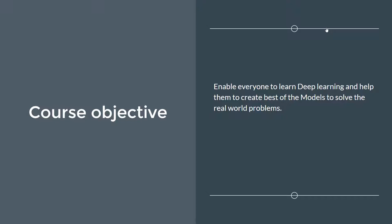Now we know the course prerequisites and what this course is about. What's the objective we are trying to achieve? The course objective is pretty simple: we want to enable everyone to learn deep learning, and we want to help everyone create the best models to solve real world problems.